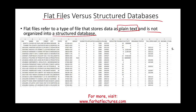It would look something like this — it looks like an Excel sheet. For example, I downloaded this Excel file from the IRS website. It's about nonprofit organizations in New Jersey. They have their names, their addresses, their tax status, and so on and so forth. This is what a simple flat file would look like.